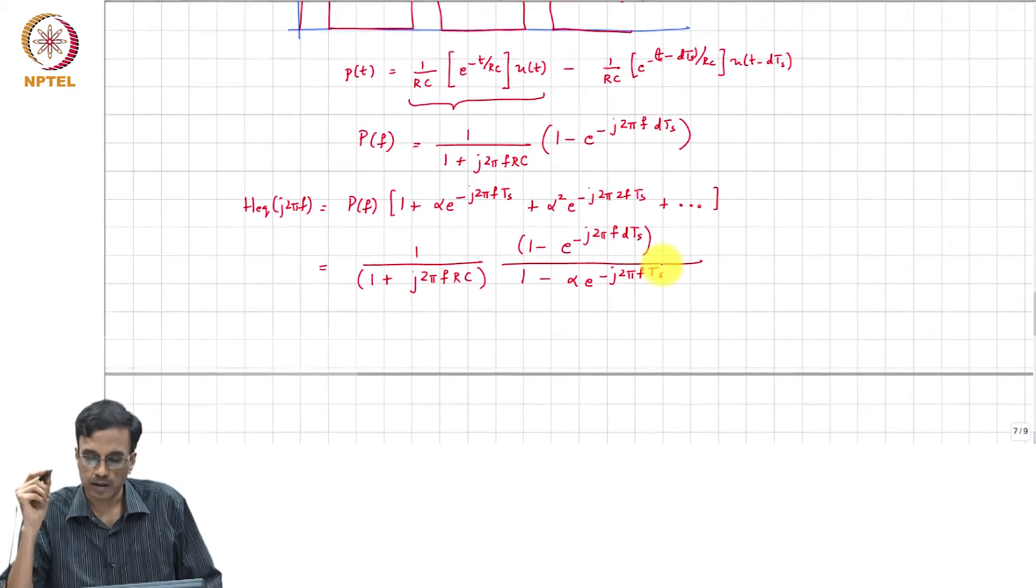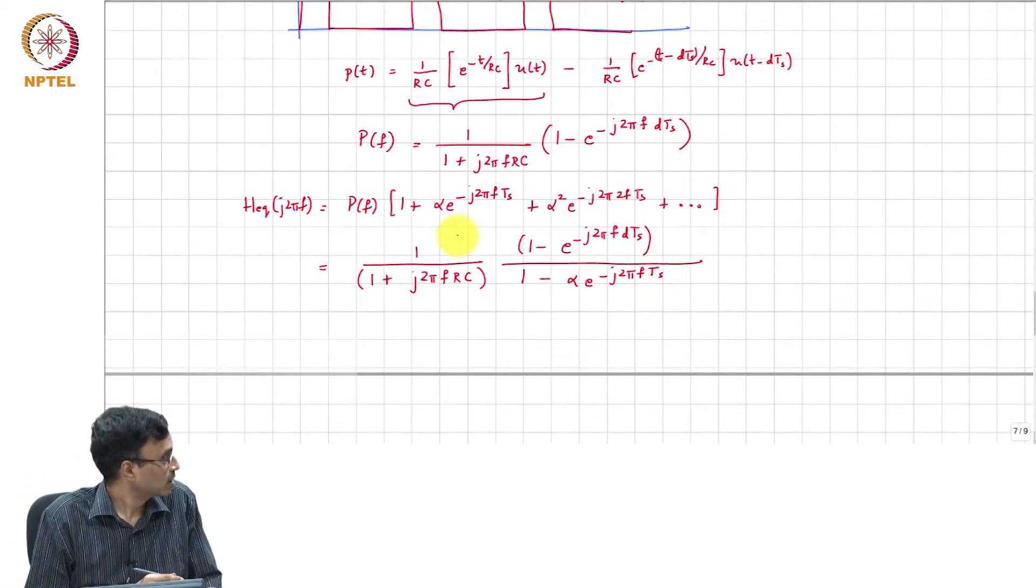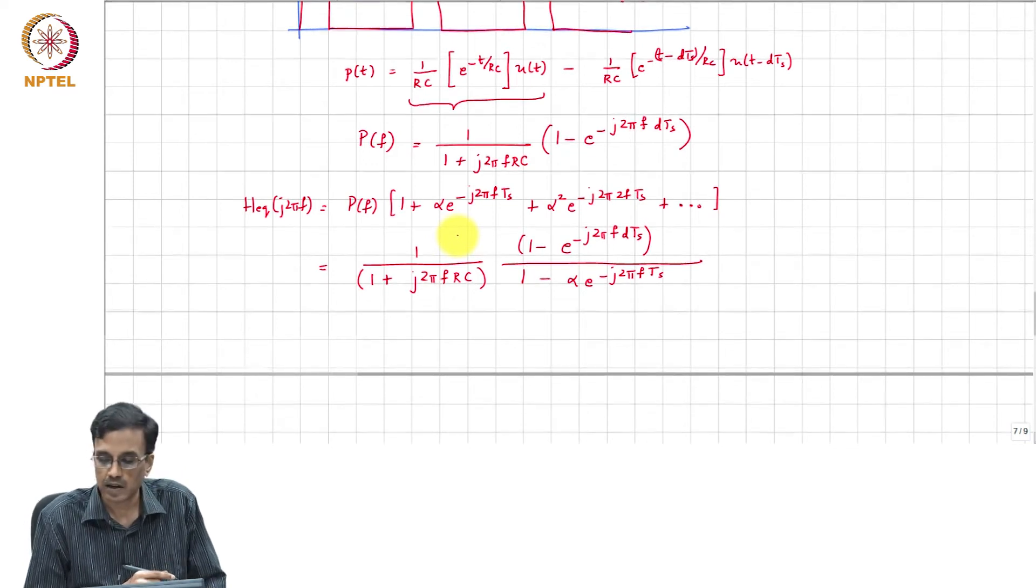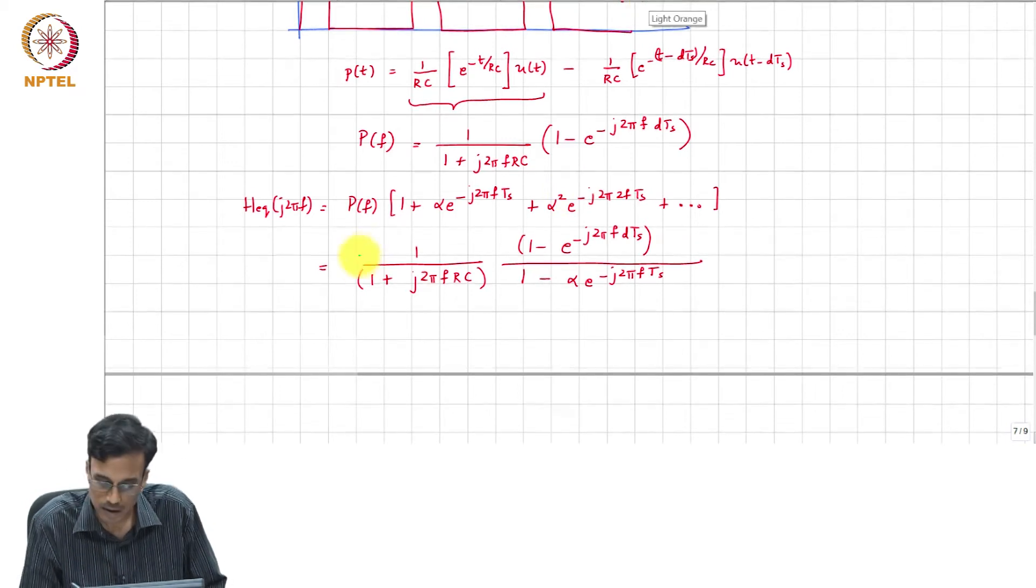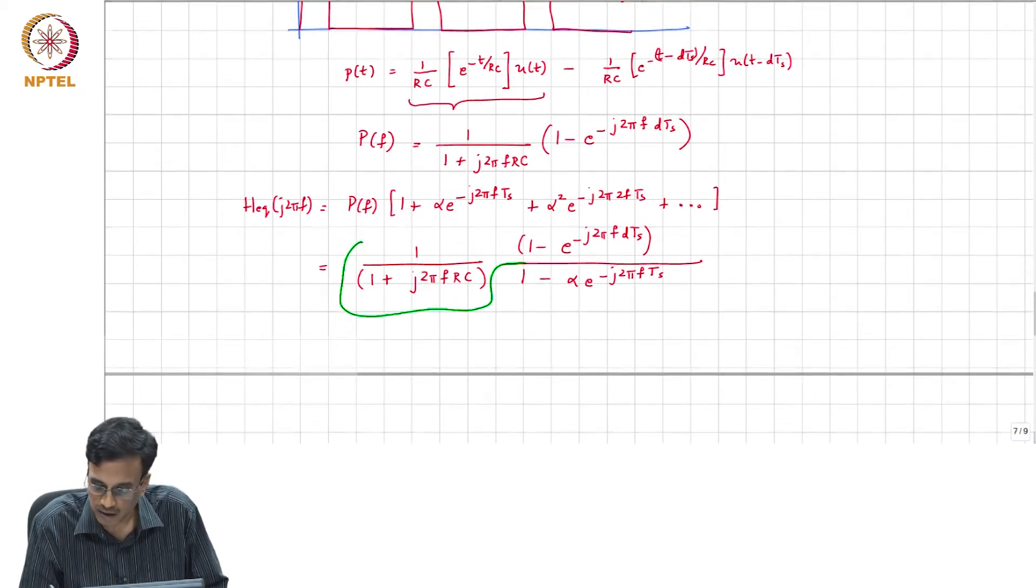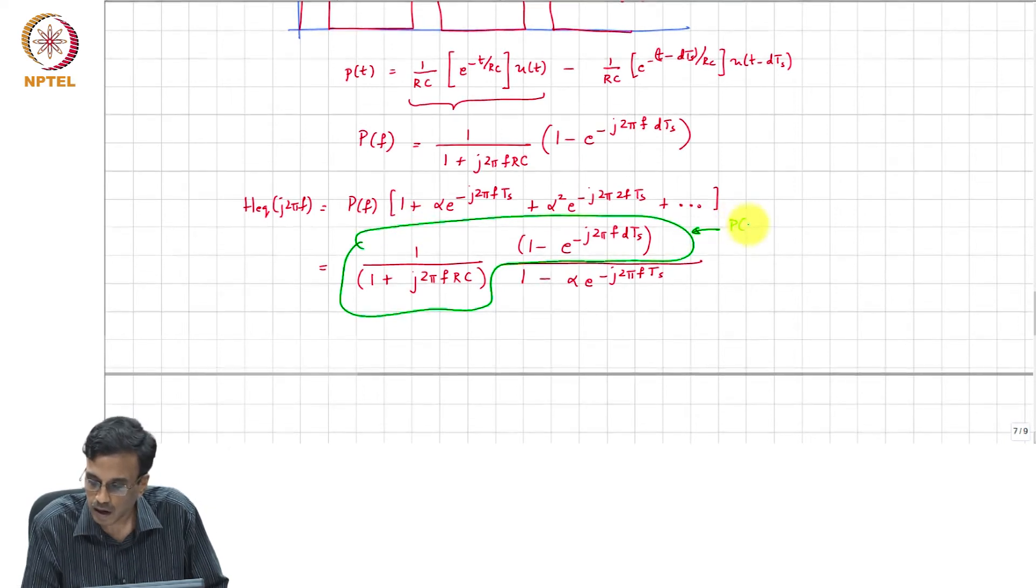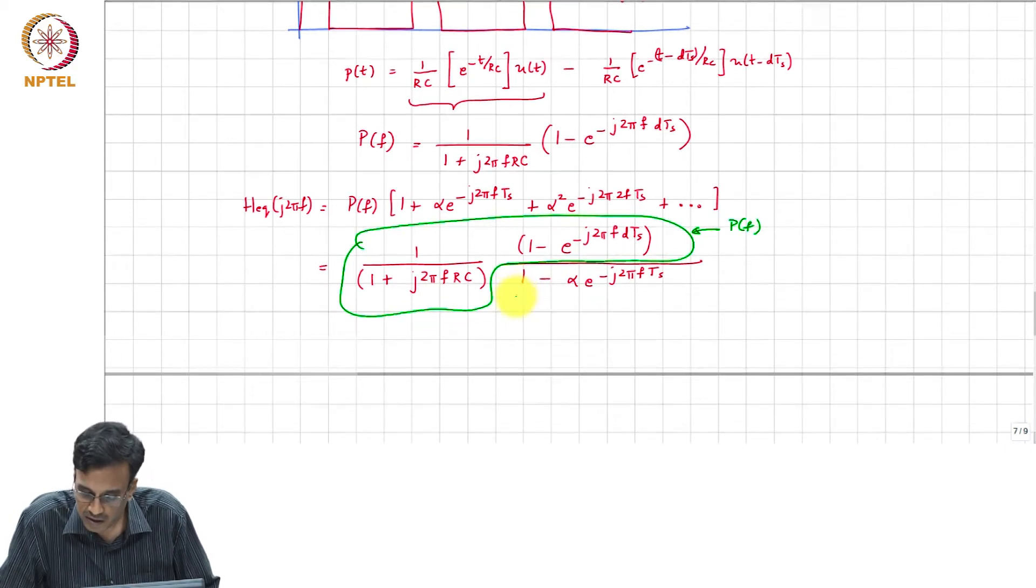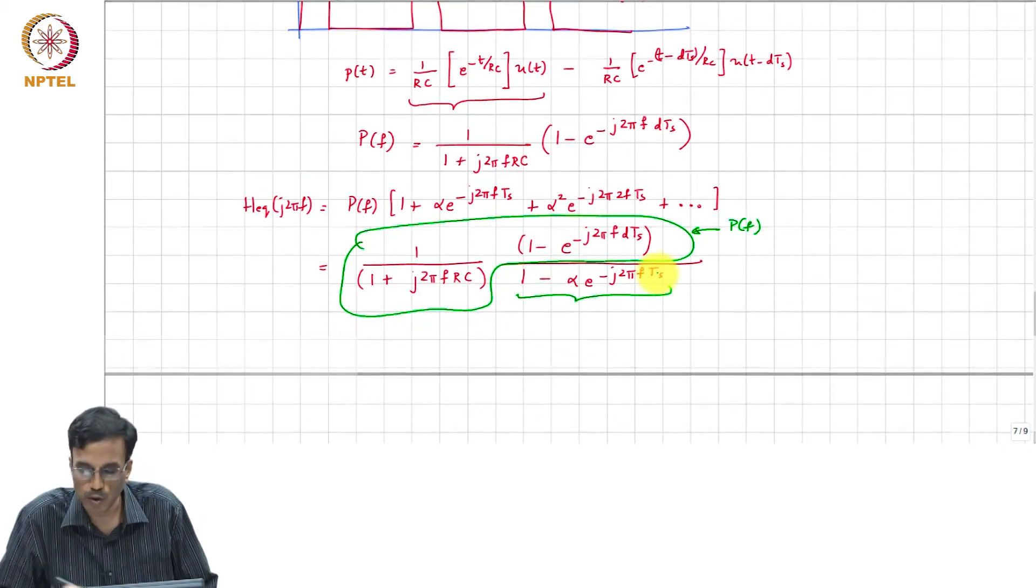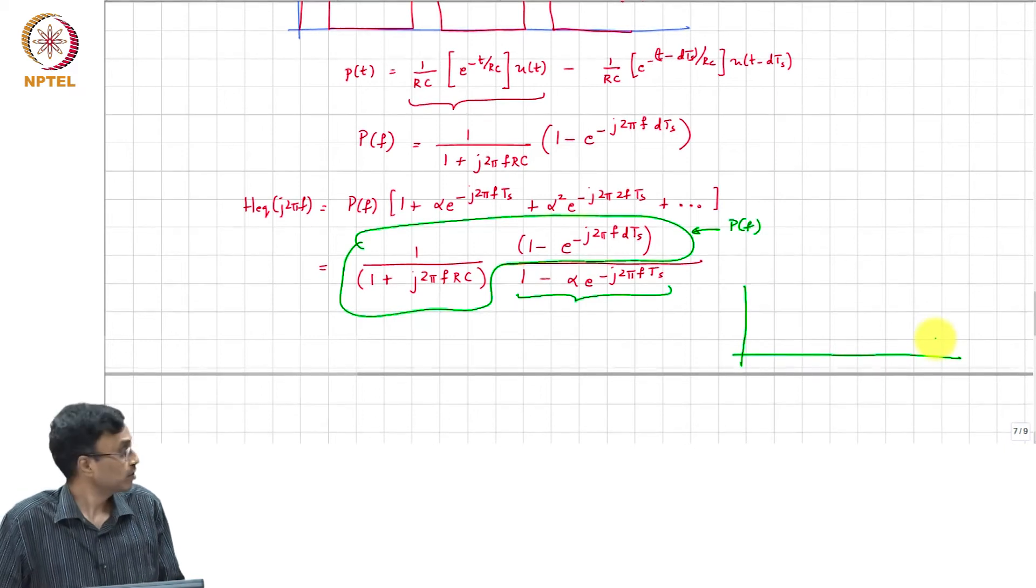So, if you plot this, what do you think you will see? Well, this is the P of F, but I am most interested in this function the denominator function. What do you think it will be at T equal to 0? I mean at F equal to 0?